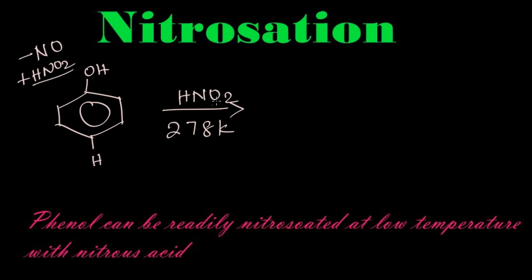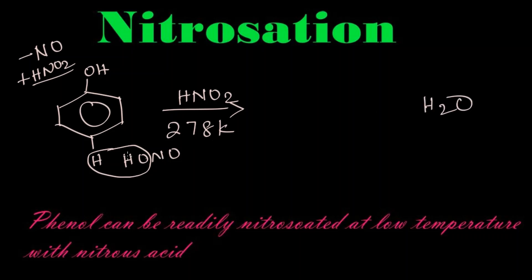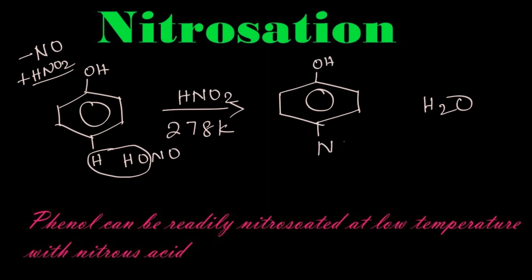For convenience we are writing nitrous acid as HONO. What happens? This H and OH will leave as a water molecule, H2O. This NO group will be attached instead of this hydrogen. So we get the phenol with OH, and here NO will be attached at the para position. The name of this compound is para-nitrosophenol.